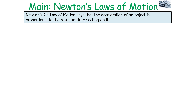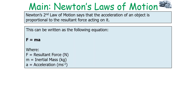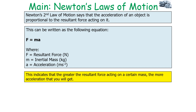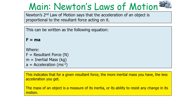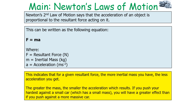Newton's second law of motion says that the acceleration of an object is proportional to the resultant force acting on it. This can be written as F equals ma, where F is the resultant force in newtons, m is the inertial mass in kilograms, and a is the acceleration in metres per second squared. The greater the resultant force acting on a certain mass, the more acceleration you will get. For a given resultant force, the more inertial mass you have, the less acceleration you get. The mass is referred to as inertial mass as it provides the tendency for inertia — the greater the mass, the smaller the acceleration which results.